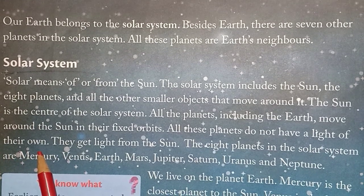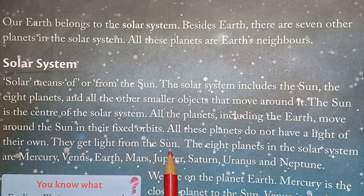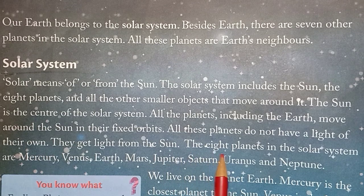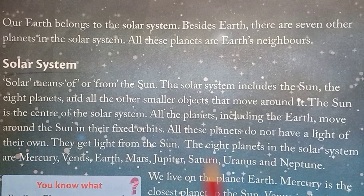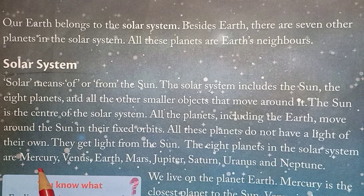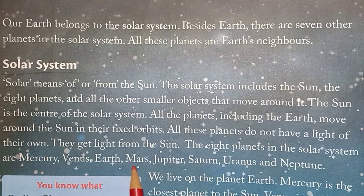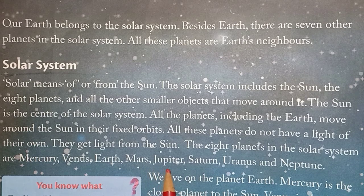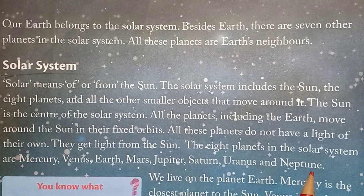All these planets do not have a light of their own — they get their light from the Sun. The eight planets in the solar system, starting from the Sun, are: Mercury, Venus, Earth, Mars, Jupiter, Saturn, Uranus, and Neptune.